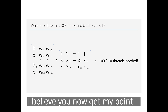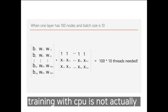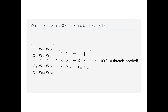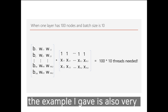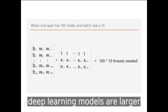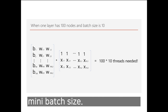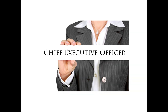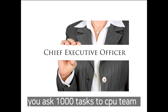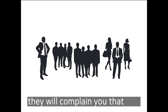I believe now you get my point — training with a CPU is not ideal even for a normal deep learning model. The example I gave is also a very small deep learning model, and practical deep learning models are even deeper, larger, and use greater mini-batch sizes. Coming back to the CEO example: you ask 1,000 tasks of your super-smart CPU team, and they complain that these 1,000 tasks are too much to finish in one day with only 12 people.